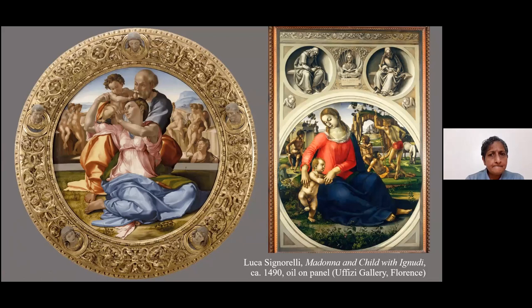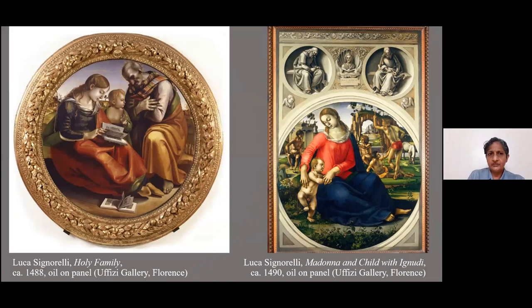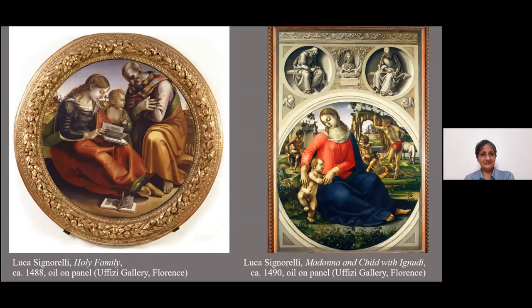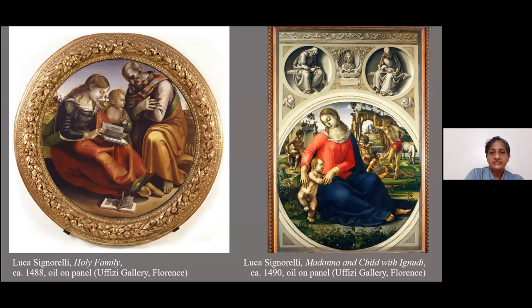Luca Signorelli also created a proper tondo, which has the Holy Family. You will see the Virgin has a book on her lap, and there is also a book at her feet. The meaning being conveyed is two books — the Old and the New Testament. The one that is on the Virgin's lap is the New Testament because she's the mother of Christ. I'll come back to this idea of the book on the Virgin's lap when we look at one of the sculpted tondi.